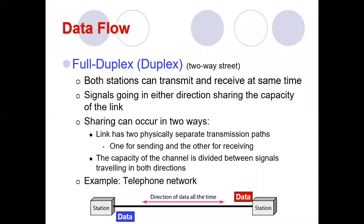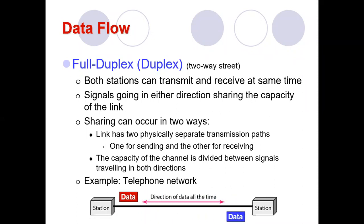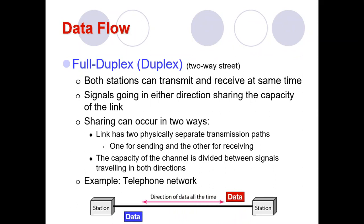Now you should compare all three modes: simplex, half duplex, and full duplex. Remember that full duplex is also called duplex mode, and we can think of it as a two-way street. Make sure you are clear with all three types of communication data flow between two devices or nodes.